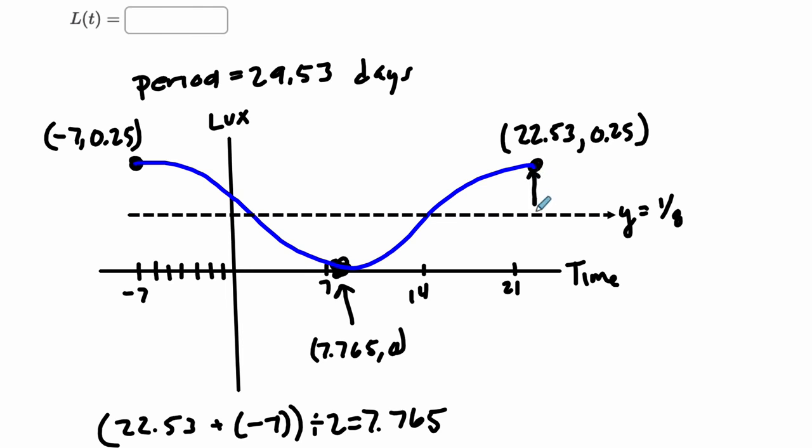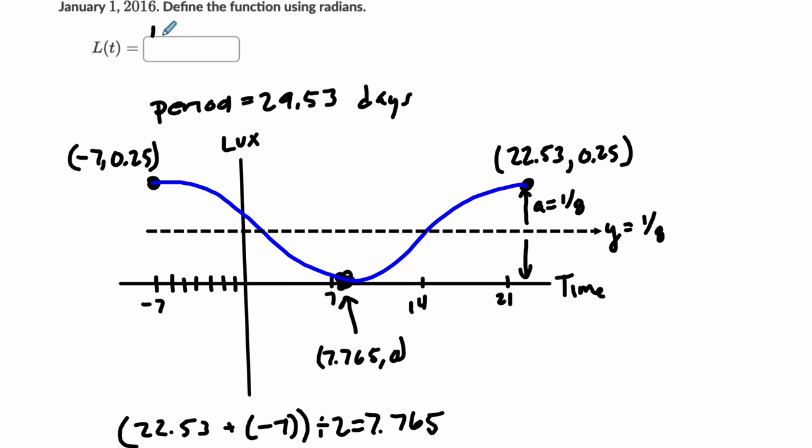And the amplitude, the distance between, right, because it's the halfway point around 0, the amplitude is also 1 eighth. And that tells me that our function should start off with the 1 eighth. Remember the template. If we're using cosine A, it tells us the amplitude. So the absolute value of A is the amplitude. Times the cosine of B will help us find the period, because 2 pi divided by the period is B.